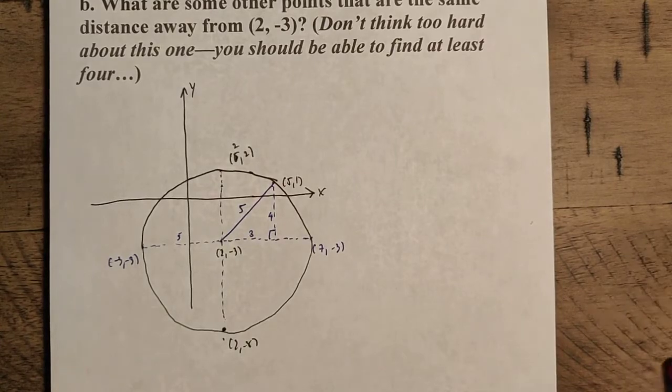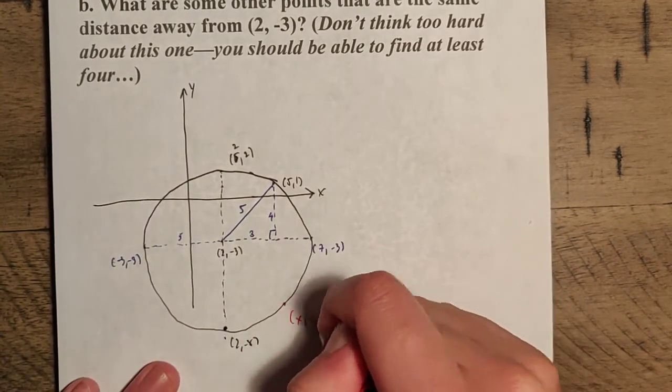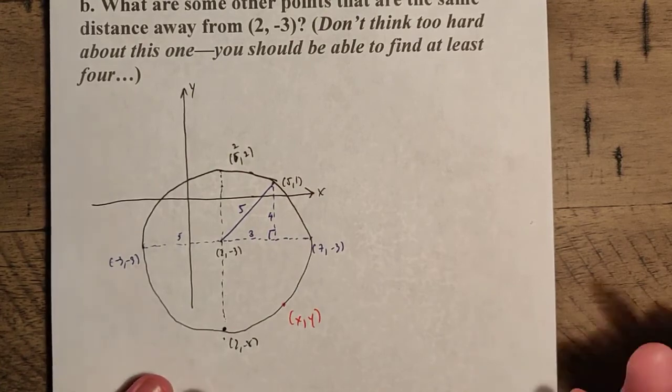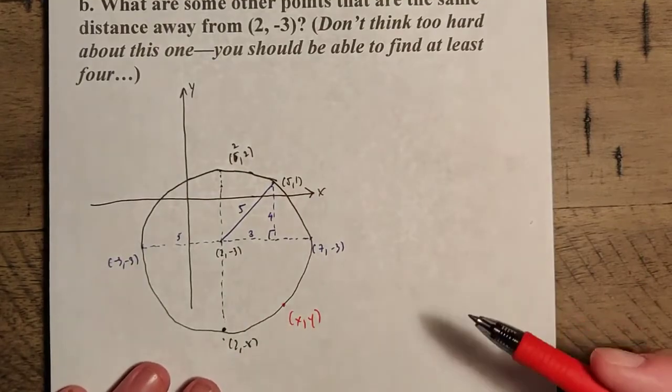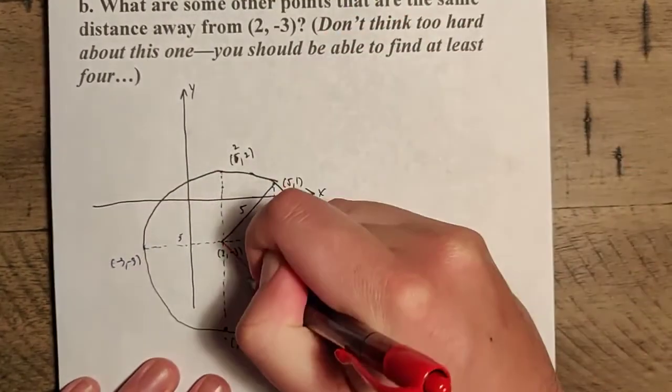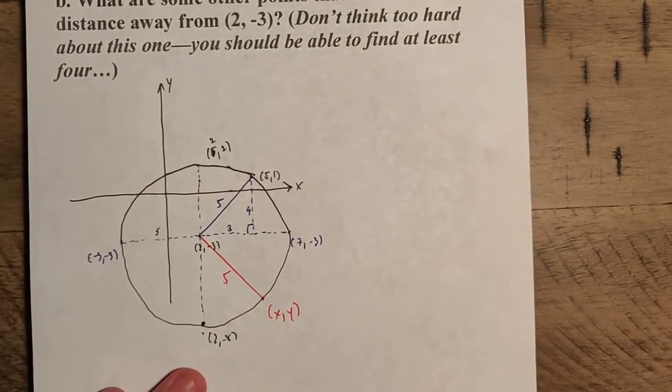So if we look at the circle, let's pick some general point, x comma y. Now, if it's on the circle, remembering our definition, this particular circle, every point on the circle is five units away from two negative three, which means that if I were to draw this distance here like this, this would be a distance of five.